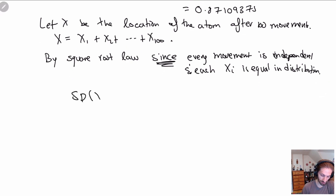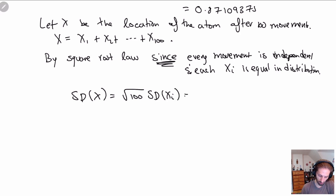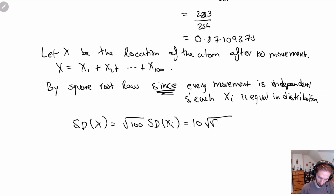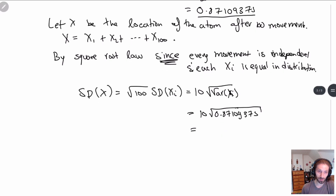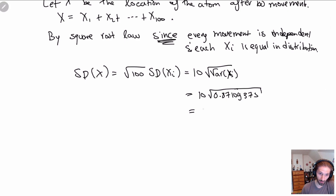This means SD(X) = √100 · SD(X_i). The square root of 100 is 10. SD(X_i) = √Var(X_i) = √0.87109375. So SD(X) = 10 · √0.87109375. Solving this gives 9.33324033.